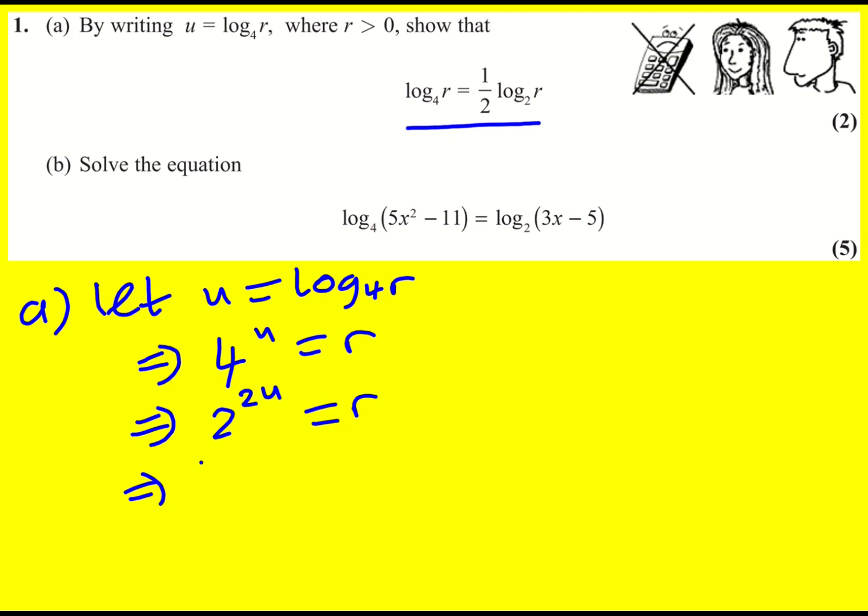And that is going to mean that log to base 2 of r is equal to 2u for similar sorts of reasons. Because remember it's 2 to the power of 2u is equal to r.